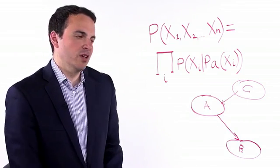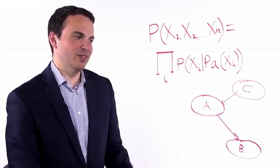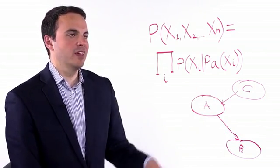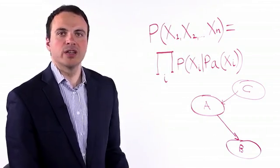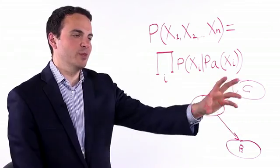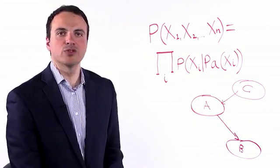I have to glue these probabilities in a chain and this master formula is this chain multiplication that from local assignments of probabilities gives the global joint probability.